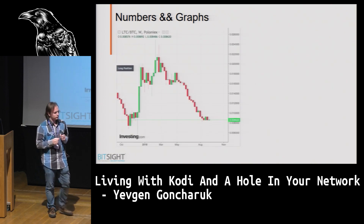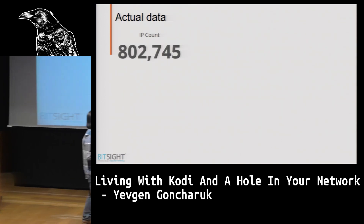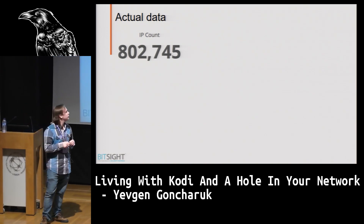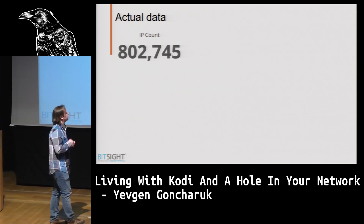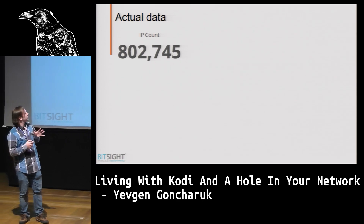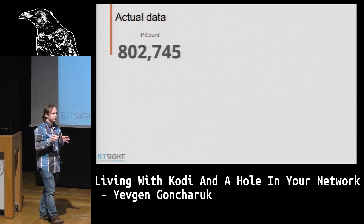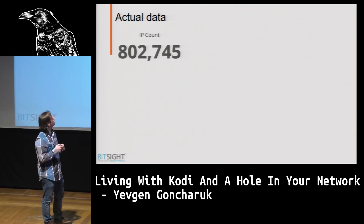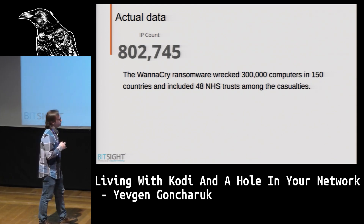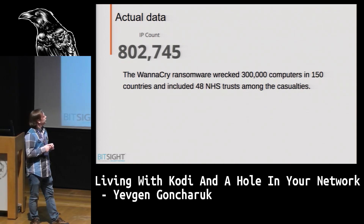Let's see some numbers and some graphs. Here we have an IP count. We have an infrastructure that sees interesting events happening in the wild. In this case we are seeing seven days of data — there are 802,000 unique IPs of Kodis communicating with us in seven days. That might not sound like much, but WannaCry only needed 300,000 computers worldwide to make so much noise. Why compare these numbers? Because size really matters, and in this case we are talking about Kodis that can run anywhere.